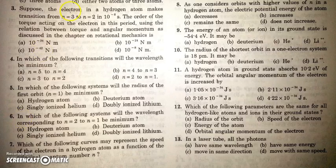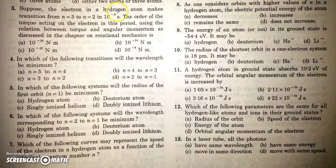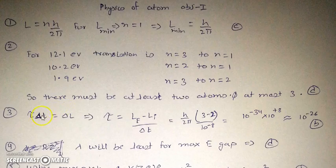In the next question an electron in a hydrogen atom makes a transition from n equal to 2 to from n equal to 3 in this much time. The order of torque acting on the electron in this period using the relation torque and angular momentum as discussed in chapter of rotational mechanics.